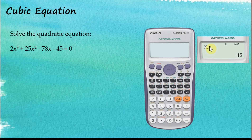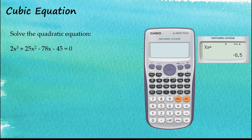The first solution is negative 15, the second solution is 3, and the third solution is negative 0.5. That's how we solve cubic equations. This is a very useful tool for solving both quadratic and cubic equations.